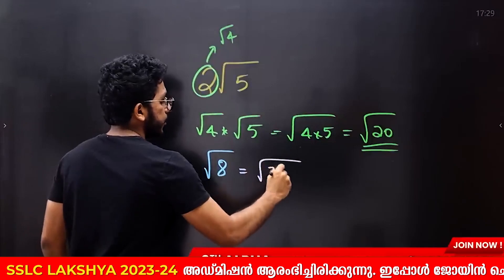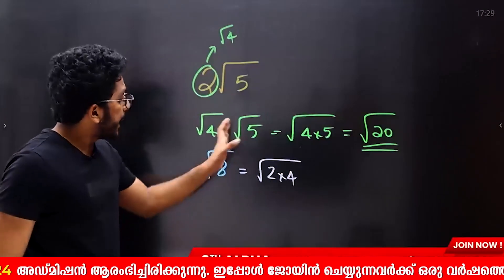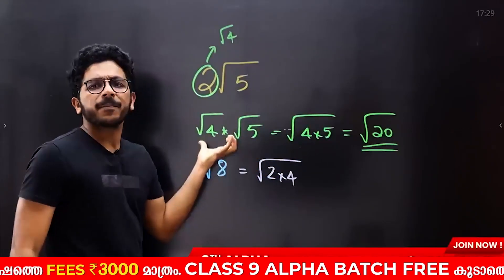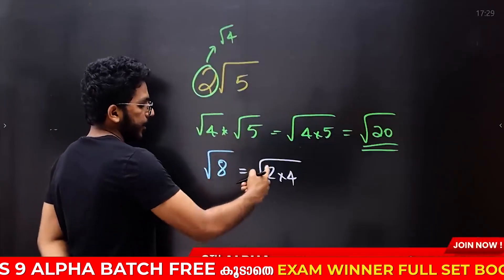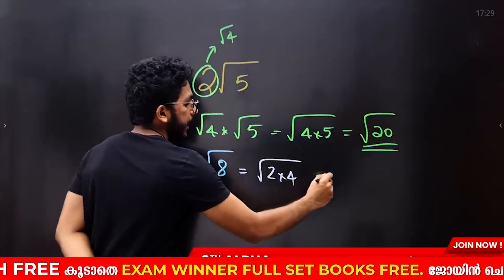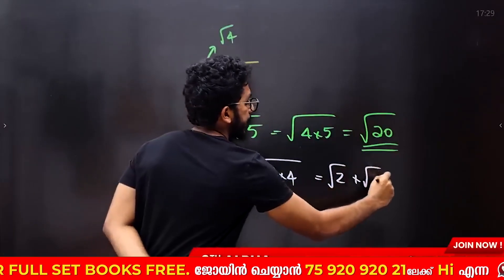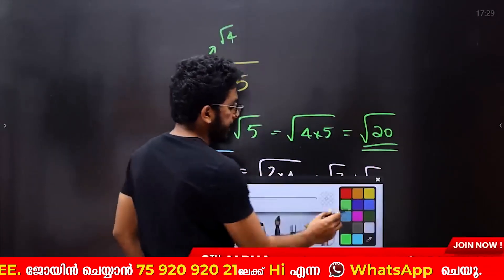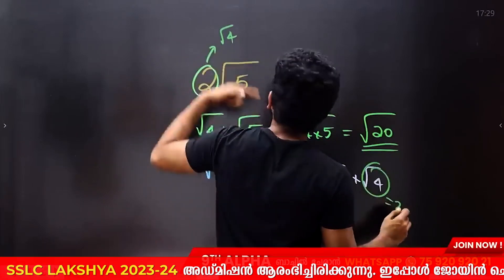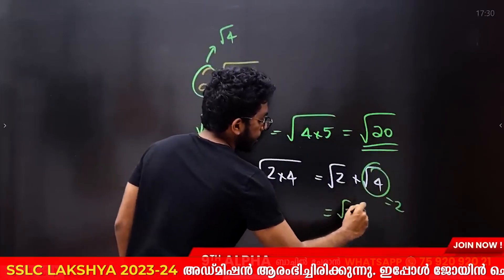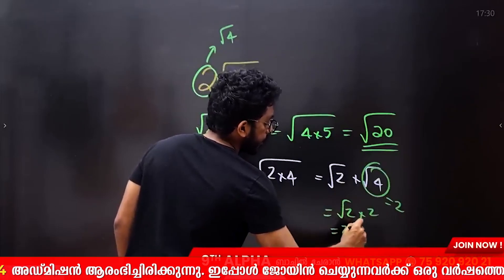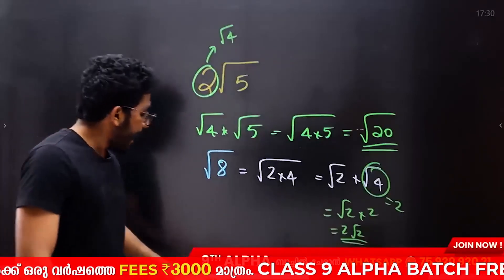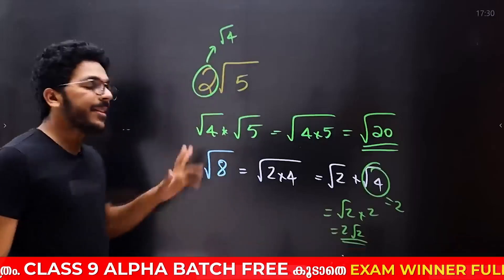Then root 2 into 4 becomes root 2 into root 4 — we separate them. Root 4 equals 2, so root 8 equals root 2 into 2, which is 2 root 2. That is the simplification. From that point it will simplify. What is our question?